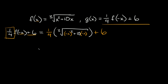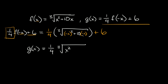This whole thing is equal to g of x. We can distribute the one-fourth in, but there's nothing inside to combine with it, so it basically just stays as our leading coefficient — one-fourth times the cube root. Negative x squared equals positive x squared, and positive 10 times negative x is negative 10x. So g of x is equal to one-fourth times the cube root of x squared minus 10x, plus six at the very end. That's as simplified as we can get it.